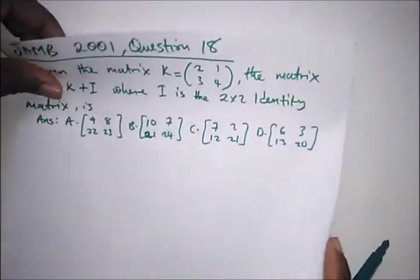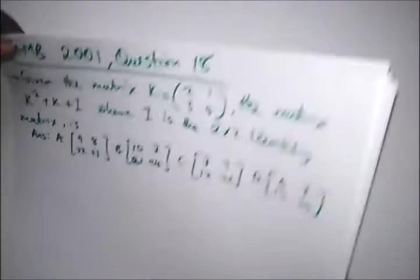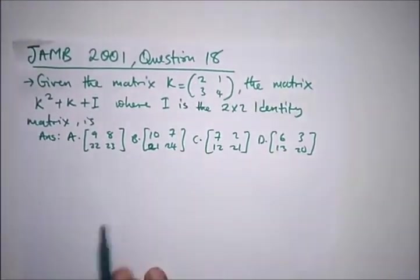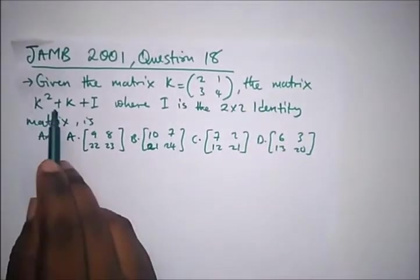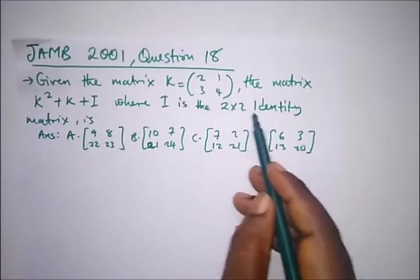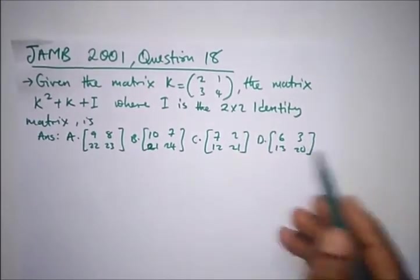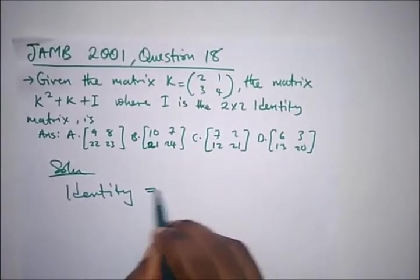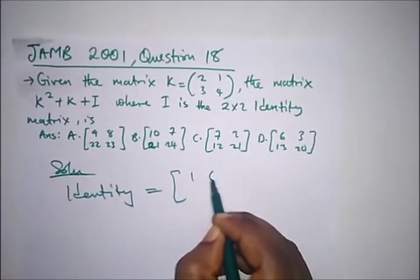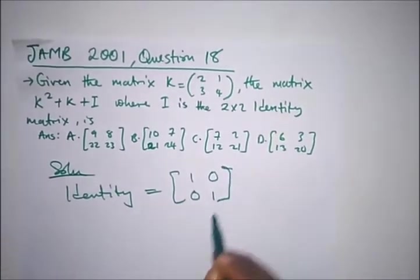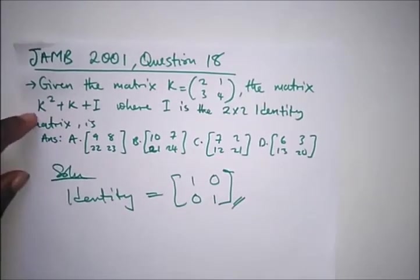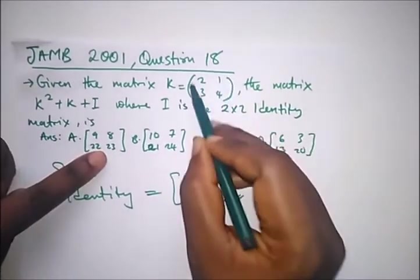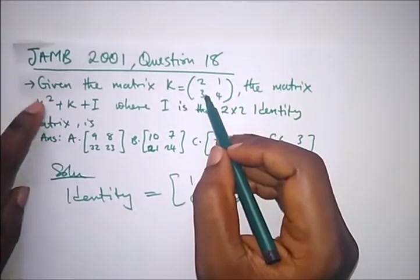We have a question from JAMB 2001 question 18. It says given the matrix k equals this, find the matrix k squared plus k plus I, where I is a 2 by 2 identity matrix. This is an identity matrix where the principal diagonal is all ones. K squared means you will perform a multiplication operation, not just squaring each element.